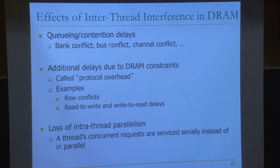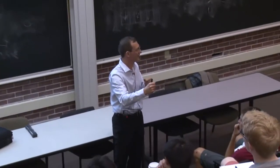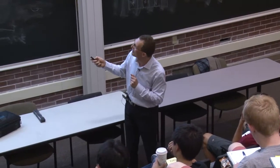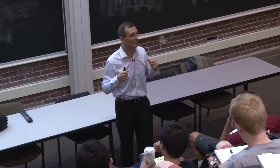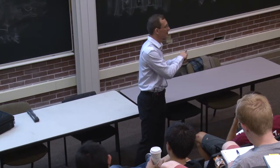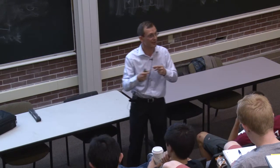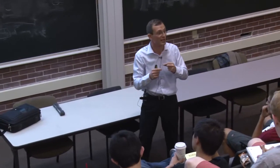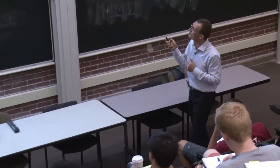Additional effects include queuing and contention delays, bank conflicts, bus conflicts, and channel conflicts. Row conflict is an additional delay — the pre-charge command is overhead with no data bus utilization. Switching between reads and writes also causes dead cycles. We also lose inter-thread bank parallelism. The problem is memory controllers are not aware of quality of service or interference. Existing DRAM controllers simply aim to maximize DRAM throughput — they were designed for single-core systems.